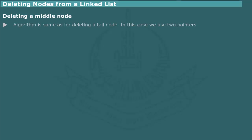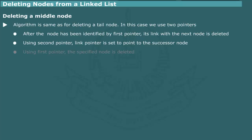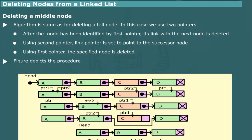Deleting a middle node. The algorithm for deleting a middle node is essentially the same as for deleting a tail node. We use two pointers to scan the list, such that one pointer immediately follows the other. After the given node has been identified by the first pointer, we remove its link to the next node. Using the second pointer, we set the link pointer of the preceding node to point to the node next to the given node. Finally, using the first pointer, we delete the specified node. Figure depicts the procedure for deleting node C of a linked list that initially contains letters A, B, C, and D.